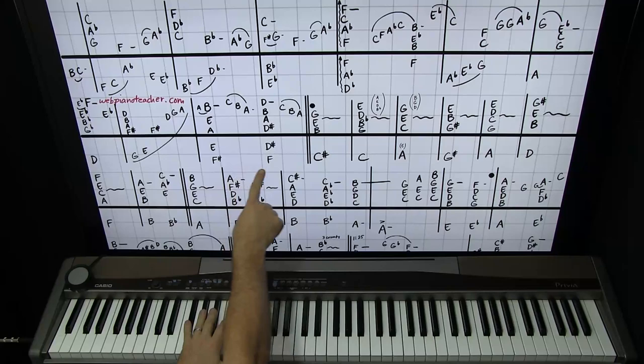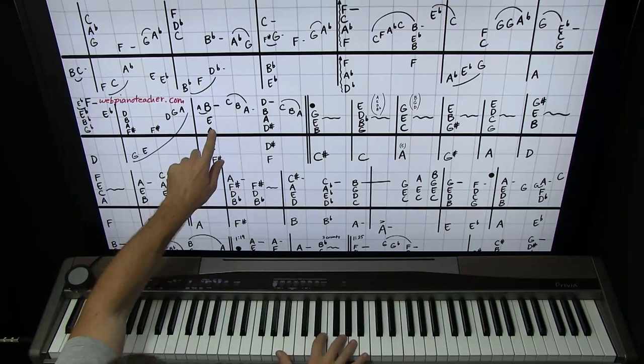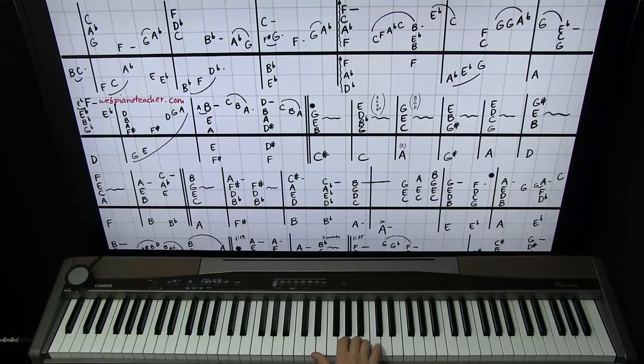So F sharp, E on the left. Then we go to F natural, D sharp. So the right hand, we're going to have A on our fourth finger. We're going to flip to B real quick. And then A and E with one and two. And really, you play these three notes together and go to B. And then C, B, A is fast. So you wait a little bit.